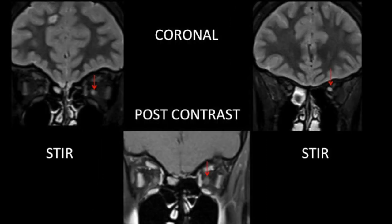Because the patient had vision loss in the left eye, MRI of the orbit was also done. These are coronal STIR images which show hyper-intense signal within the left optic nerve in its intra-orbital portion. On post-contrast study, no significant enhancement was seen within the optic nerve.